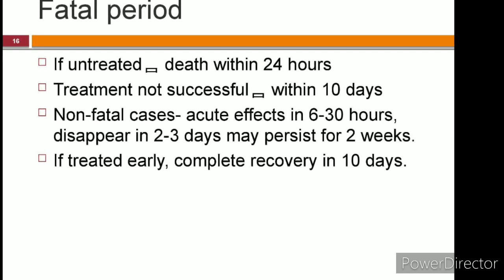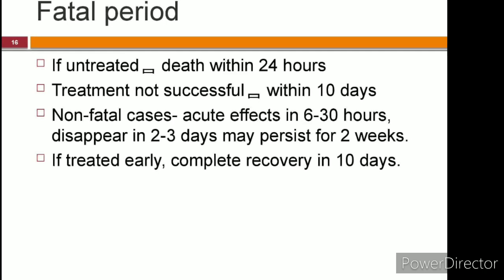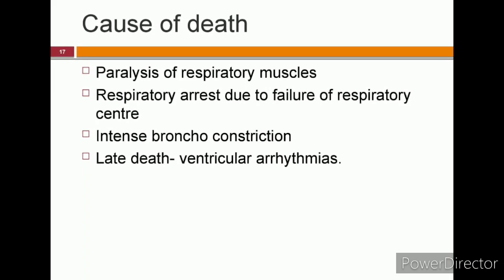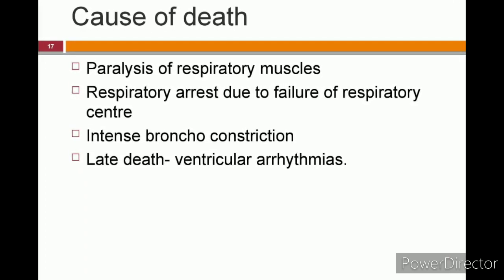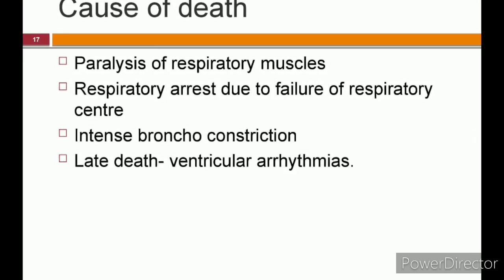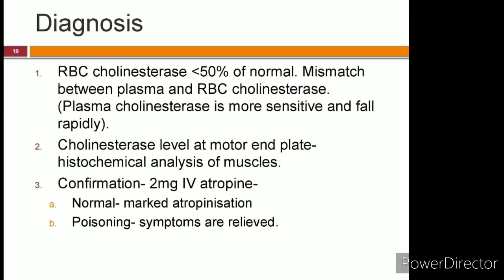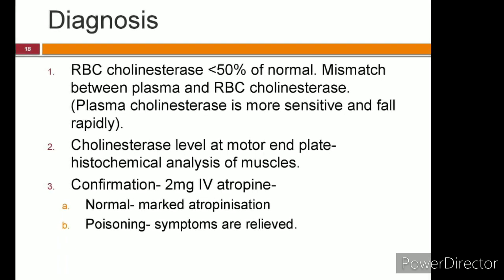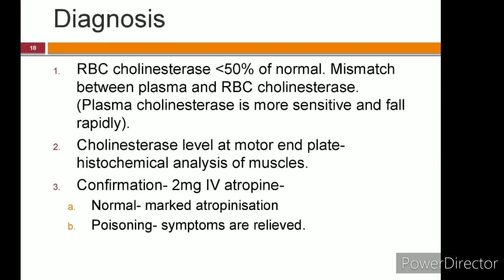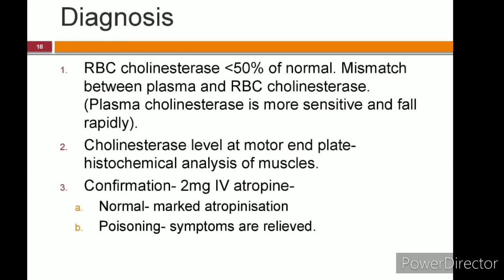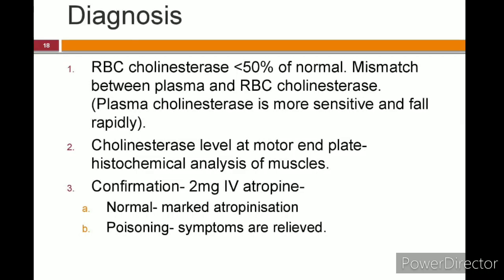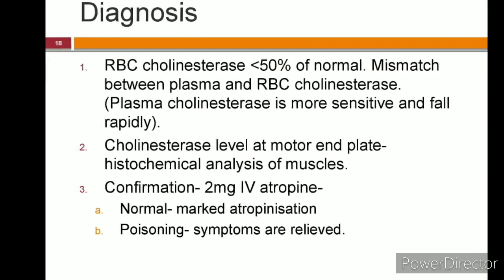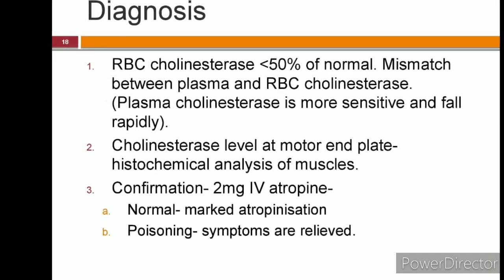It is important for a clinician to know the fatal dose and fatal period to depict the course of disease and treat accordingly. The cause of death is due to either paralysis of the respiratory muscle, respiratory arrest due to failure of the respiratory center, or intense bronchoconstriction. Late death is mainly due to ventricular arrhythmias. Diagnosis can be done by three methods: first, estimation of RBC and plasma cholinesterase levels — if RBC cholinesterase falls below 50% of normal or there is a mismatch between plasma and RBC levels. Plasma cholinesterase is a more sensitive indicator and falls rapidly in acute poisoning. Second, histochemical analysis of muscles for cholinesterase at the motor end plate. Third, a confirmatory test by giving 2 mg atropine intravenously.